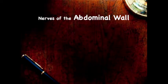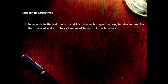Welcome to the lecturette on the abdominal wall — this one is on the nerves. Our objectives here are to be able to follow the course of the last thoracic and the first two lumbar spinal nerves and identify the structures that are innervated by each of the branches of these nerves.